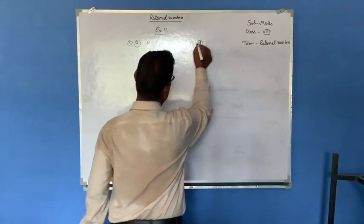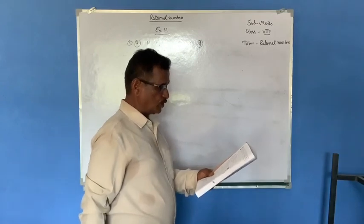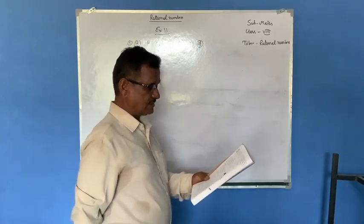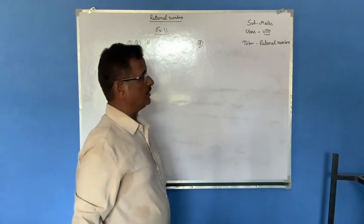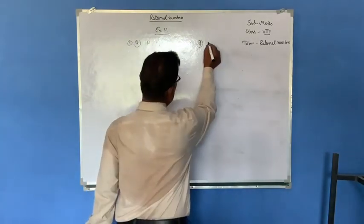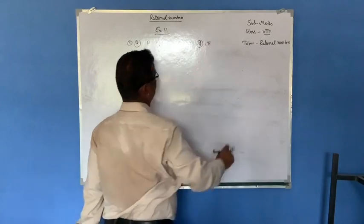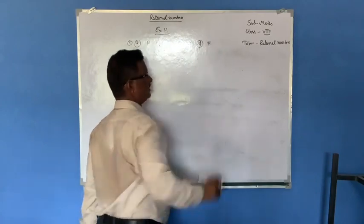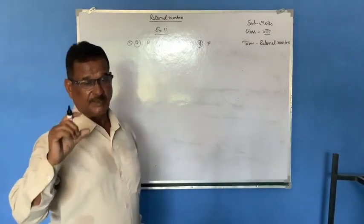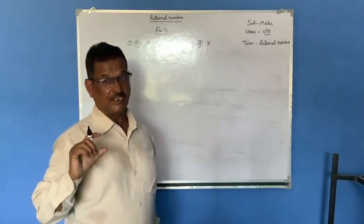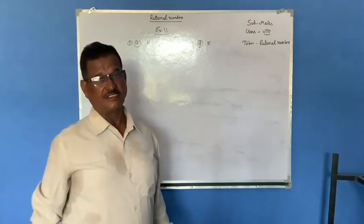D given: P/Q is a rational number if Q is 0. No, it is false. We know that a rational number is defined as P/Q where Q is not 0. But here Q is 0, so it is not a rational number. D is false.